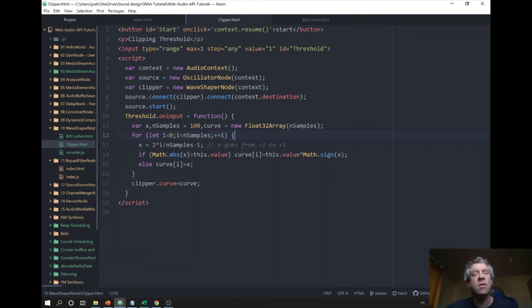So essentially, what we're specifying here is a sine wave that we clip. And we can vary where and how it gets clipped. And then every time the threshold changes, we define a new clipping curve.